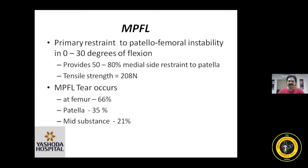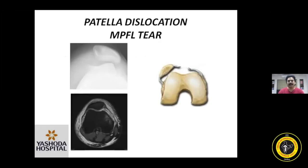The primary function of the medial patellofemoral ligament is to prevent the lateral pulling forces on the patella to balance it. Post-traumatic MPFL tears occur more commonly on the femoral side, sometimes associated with avulsions, next on the patella side, and rarely in the mid-substance of the medial patellofemoral ligament. This pictorial diagram of the X-ray and MRI shows clearly the tear of the MPFL and how the tilt and lateral displacement of the patella is seen following the tear.